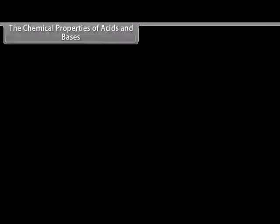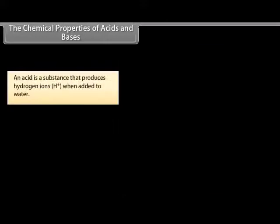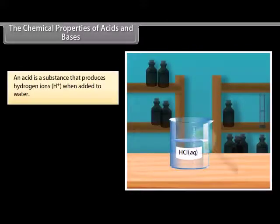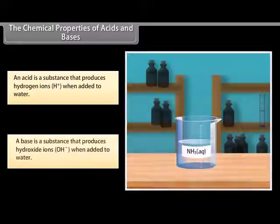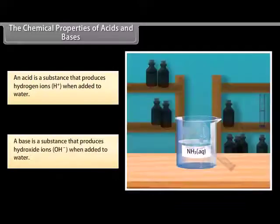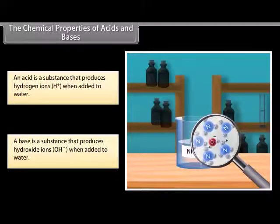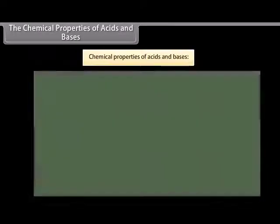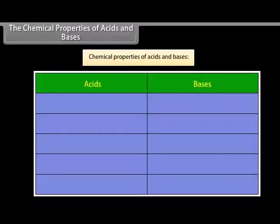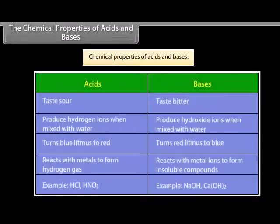An acid is a substance that produces hydrogen ions when added to water, whereas a base is a substance that produces hydroxide ions when added to water. Both acids and bases have different chemical properties. Let us look at their properties.